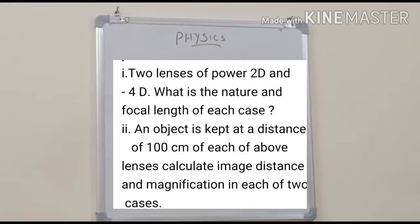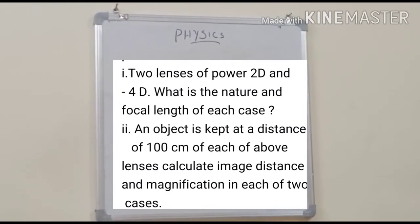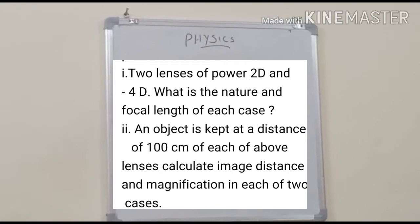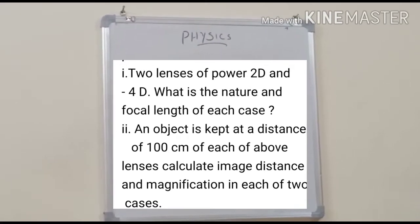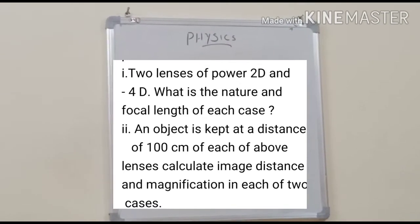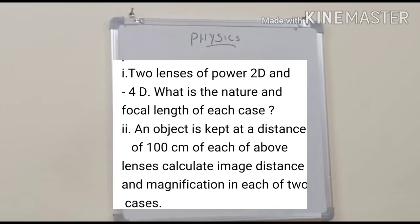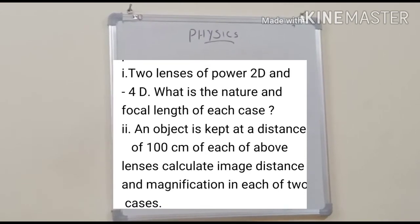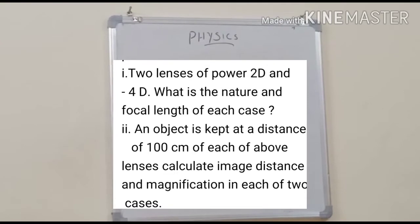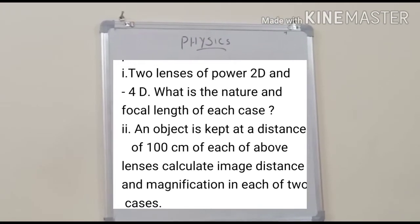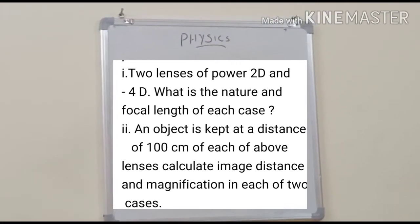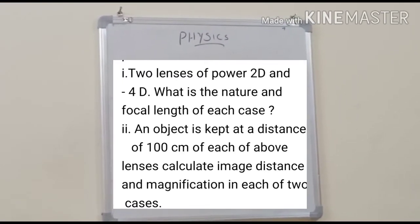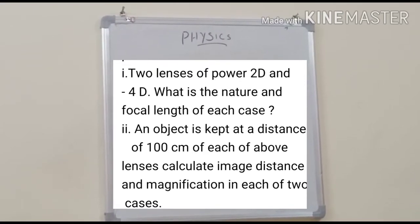The first question is: two lenses have power of 2D and minus 4D. What is the nature and focal length of each lens? The second question is: an object is kept at a distance of 100 cm from each of the above lenses. Calculate image distance and magnification in each of the two cases.